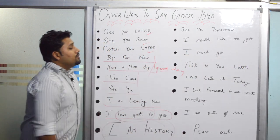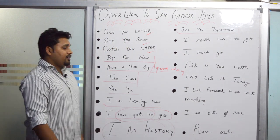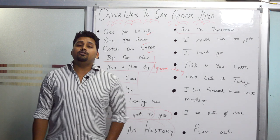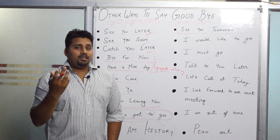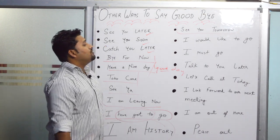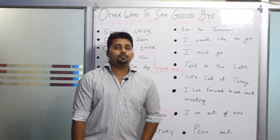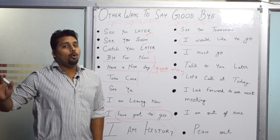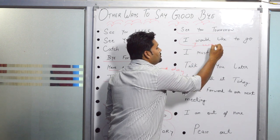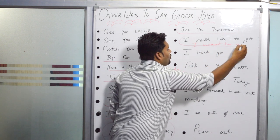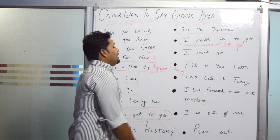You can also say 'See you tomorrow' when you are at college, office, or a friend's home and you will meet them the next day. Next is 'I would like to go' — a simple sentence to say goodbye. You can also say 'I want to go.'